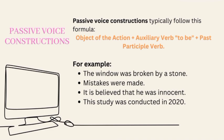Let's see examples. 'The window was broken by a stone.' This is a passive voice construction because the subject, the window, is not the agent or performer of the action, breaking. The agent is a stone, introduced by the preposition 'by'. The verb phrase 'was broken' is formed by using a form of 'to be' — was — and a past participle of a transitive verb, broken.